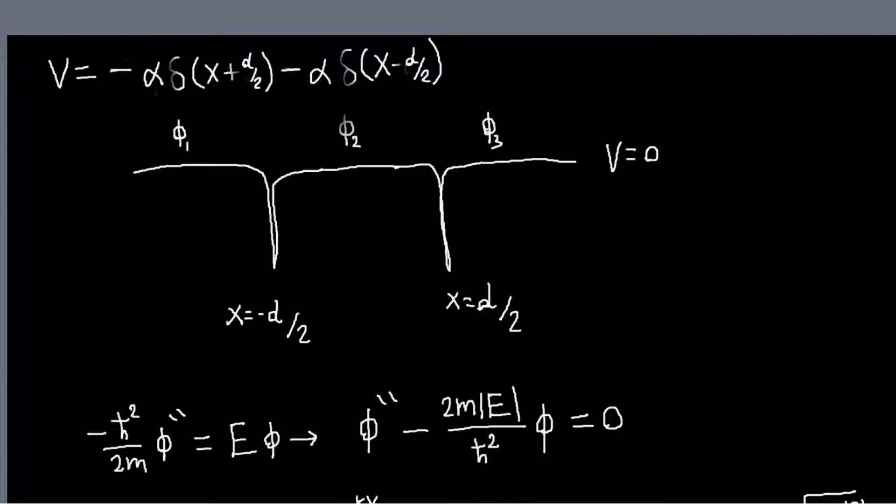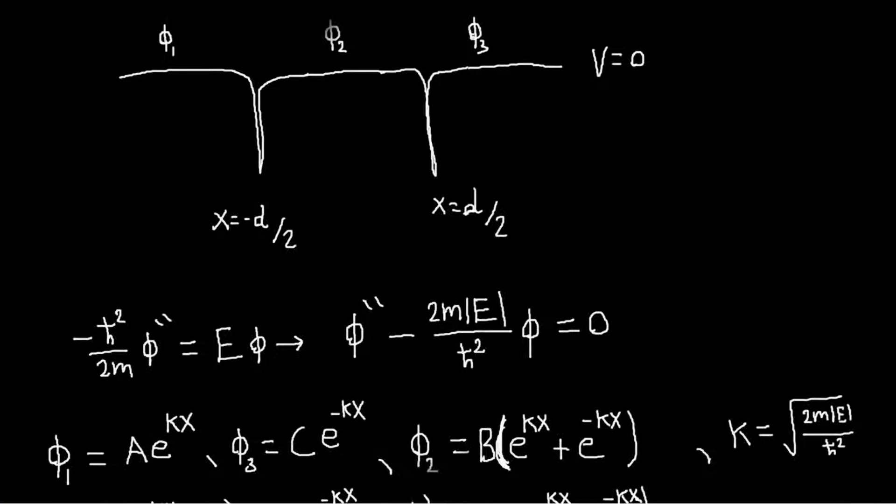And this fixes the form of our solutions to either be the hyperbolic cosine and sine functions or the exponentially growing and decaying functions. And clearly from the boundary condition that our wave function, we want it to vanish at infinity, phi 1 should go as this exponential and phi 3 should go as this one.